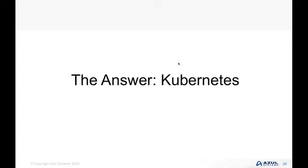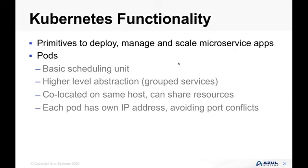This is where we get into Kubernetes. Kubernetes provides the answers to these questions. The idea is essentially to allow us to deploy, manage, and scale our application based on a set of microservices. The way we do that is through pods. A pod is the basic scheduling unit — it allows us to have a higher level of abstraction beyond a single microservice. We can create a pod with a number of microservices within it, grouping them together to be available as a single pod. We can co-locate those on the same host, share resources, share an IP address, and avoid port conflicts.